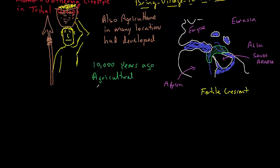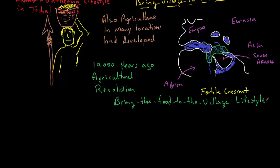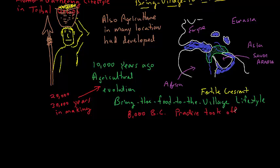It's often thought of as this quick occurrence, but I prefer really to call it the agricultural evolution, and it probably began 20,000 to 30,000 years ago and culminated in a final shift of ecological identity about 8,000 BC, changing to a bring the food to the village lifestyle.